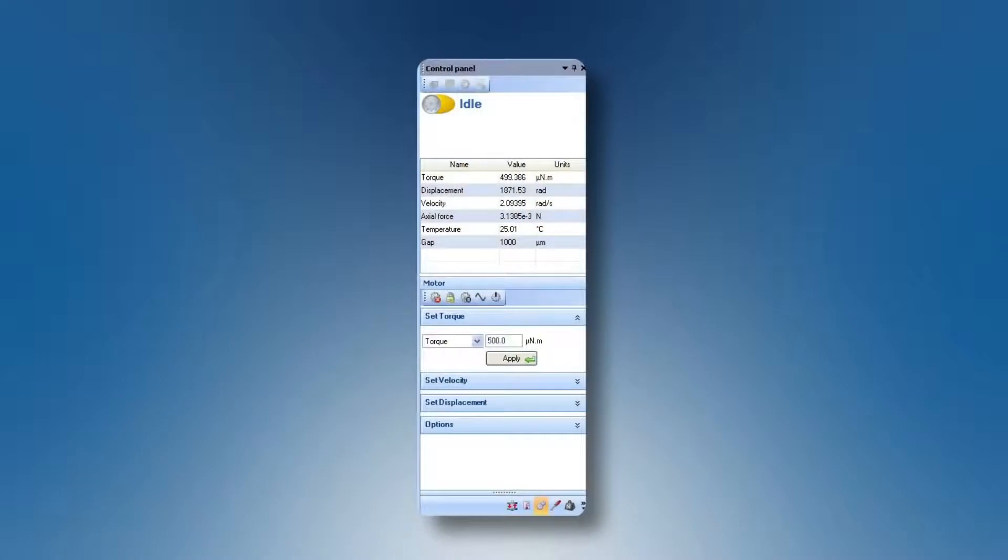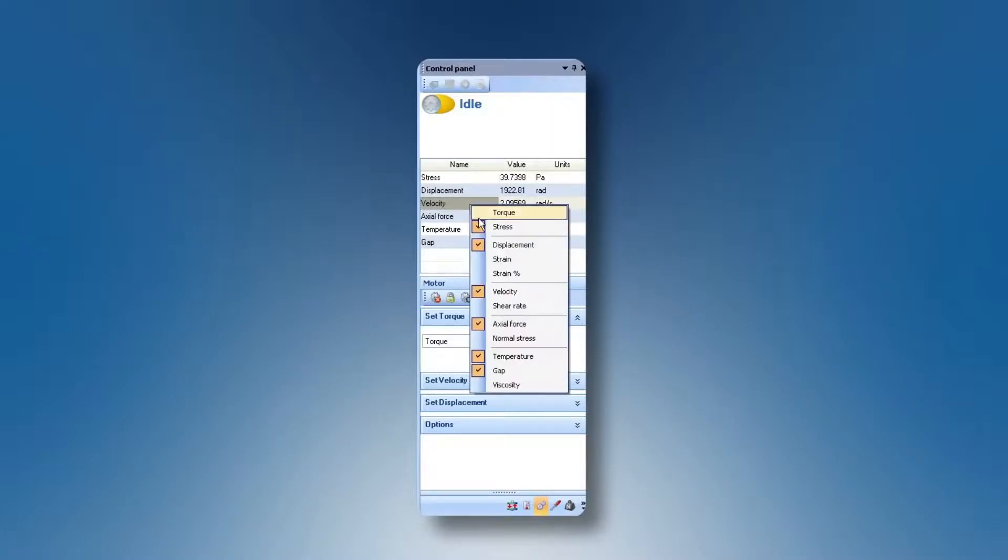In TRIOS we can choose how to display our variables, and we can switch the torque to stress. So we see our 500 µNm of torque displayed as a stress of about 40 Pa, connected via the geometric constant. We can also switch the velocity to shear rate and see the value of 41.8 as we calculated.